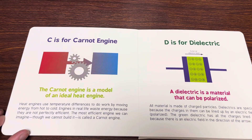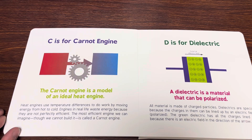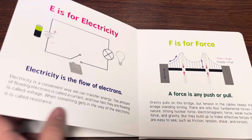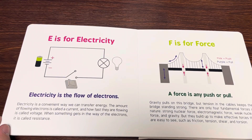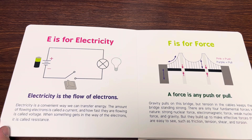D is for dielectric. A dielectric is a material that can be polarized. E is for electricity. Electricity is the flow of electrons.